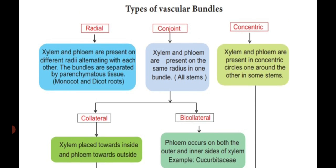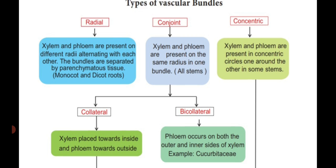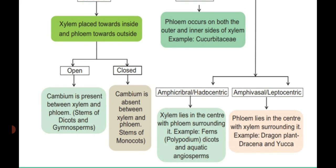The last type is the concentric vascular bundle, where xylem and phloem are arranged in the form of ring-like or concentric circles, one around the other. It is divided into two types: amphicribral (hadrocentric) and amphivasal (leptocentric). In the amphicribral vascular bundle, xylem lies at the center surrounded by phloem on the outside. Example: ferns, including Polypodium, and dicots and aquatic angiosperms.